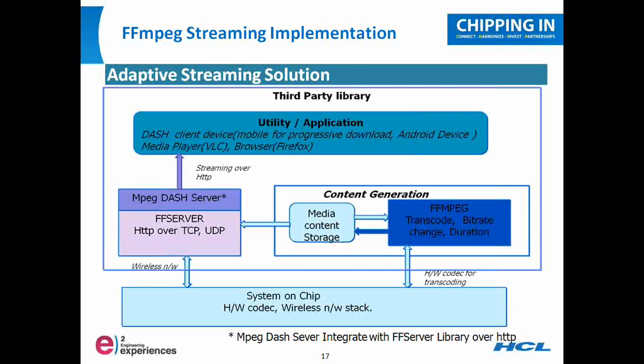In this particular diagram, there is a platform — a system-on-chip — which supports multiple hardware codecs. For connectivity, it has a wireless network stack. The FFMPEG framework sits on top of this particular platform. FFMPEG basically generates the content with different bit rates, different durations, and in the kind of format the user would want the content to be.